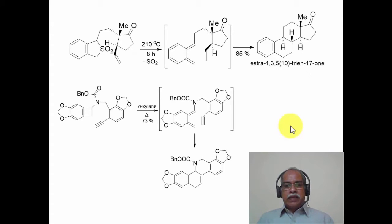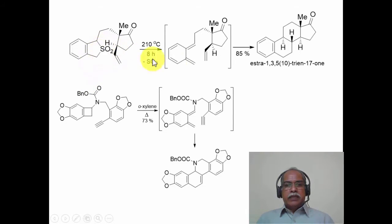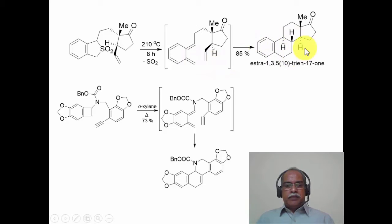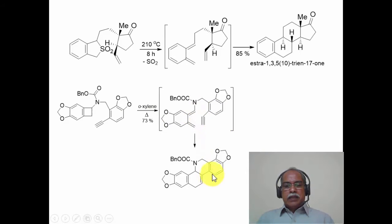These are interesting examples where the diene is generated in situ during heating. A benzosulfolane is heated, sulfur dioxide is eliminated by a cheletropic reaction, generating an ortho-quinodimethide. A built-in vinyl group as the tether brings the dienophile into close proximity, and the Diels-Alder reaction gives estrone as the product. Similarly, a benzocyclobutane derivative heated in refluxing ortho-xylene produces an ortho-quinodimethide intermediate, and the built-in acetylene pendant group undergoes 4+2 cycloaddition to give the Diels-Alder adduct.